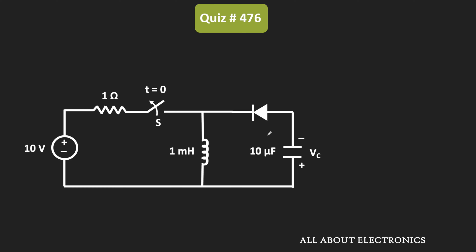We have been given that before time t equal to 0, this switch is in the closed condition and it has been in this condition since a long time, so we can say the circuit is already in the steady-state condition. In steady-state, the inductor will act as a short circuit. Initially there is no charge across the capacitor, so the diode will also remain in the reverse bias condition and will act as an open circuit.